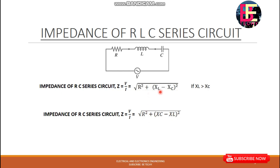We also have R squared plus (XC minus XL) squared. XL minus XC or XC minus XL — the total impedance is determined by Z equals √(R² + (XL - XC)²).